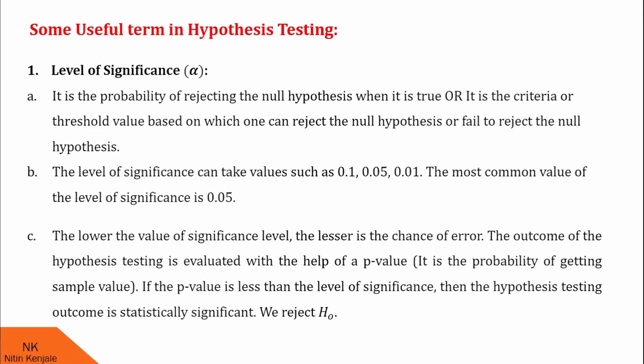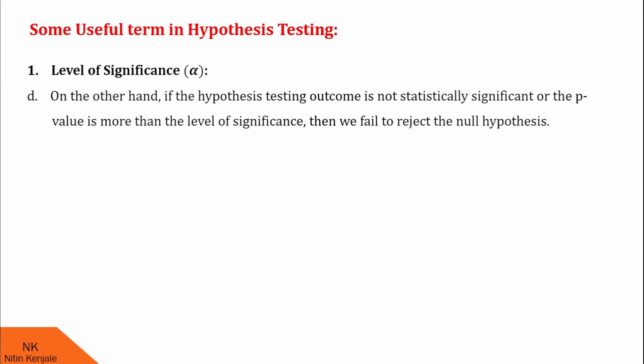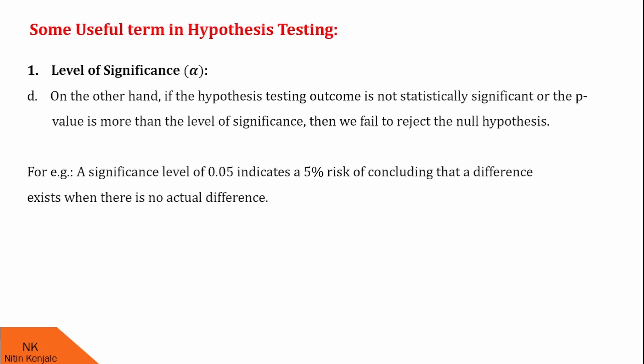The outcome of hypothesis testing is evaluated with the help of p-value, which is generally the probability of getting the sample value. If the p-value is less than the level of significance, then the hypothesis testing outcome is statistically significant — that is, we reject H0. On the other hand, if the p-value is more than the level of significance, then the outcome is not statistically significant and we fail to reject, meaning we accept the null hypothesis. For example, a significance level of 0.05 indicates a 5% risk of concluding that a difference exists when there is no actual difference.